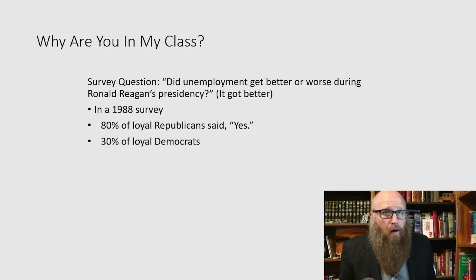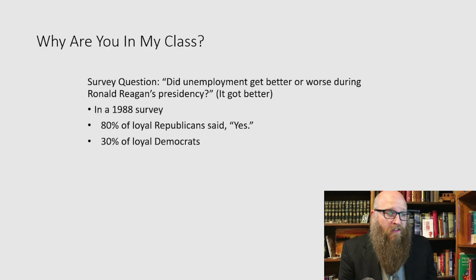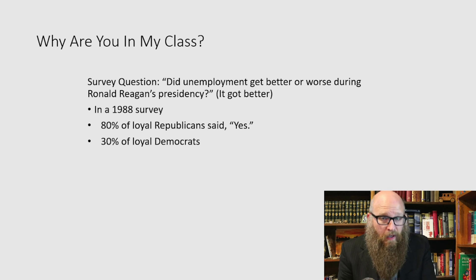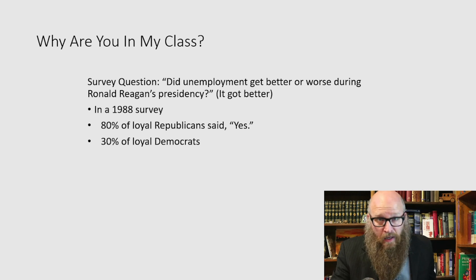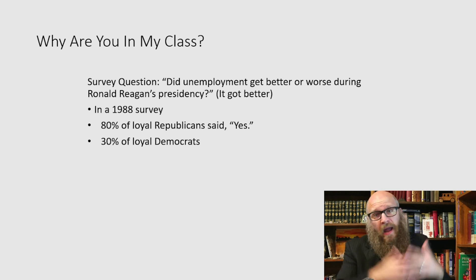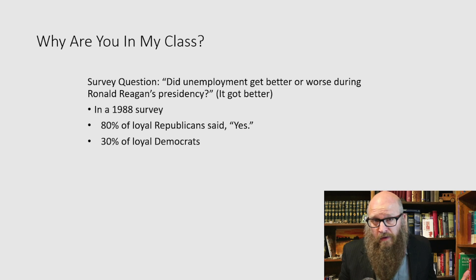So why are we here? In 1988, survey respondents were asked: did unemployment get better or worse during Ronald Reagan's presidency? This isn't an opinion — it's asking about fact. And the reality is it got better. He started office in 1981 during a recession, and by the end of his presidency, things got better.